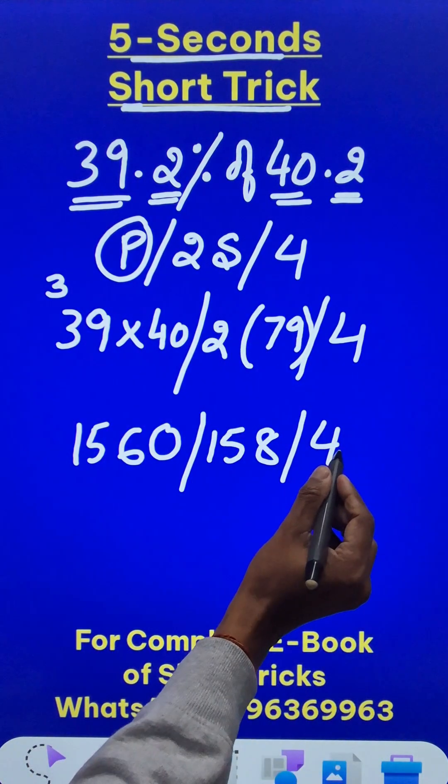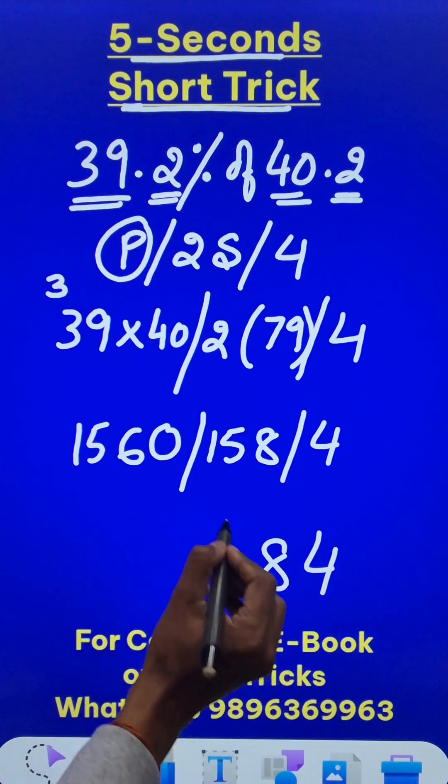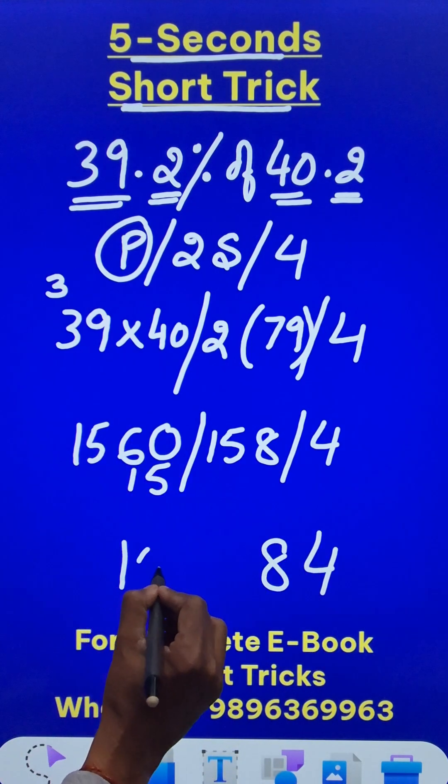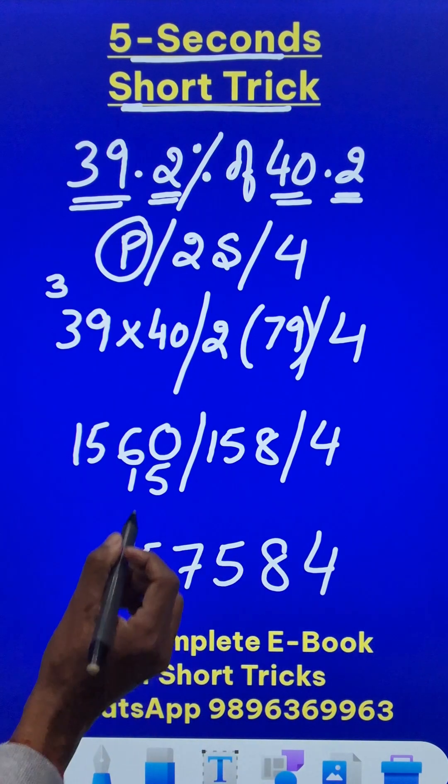So 4 retains its place. 158 means 8 and 15 gets carried forward here. So this becomes 1575. So let's write it here and now we'll have to put the decimal at the correct place.